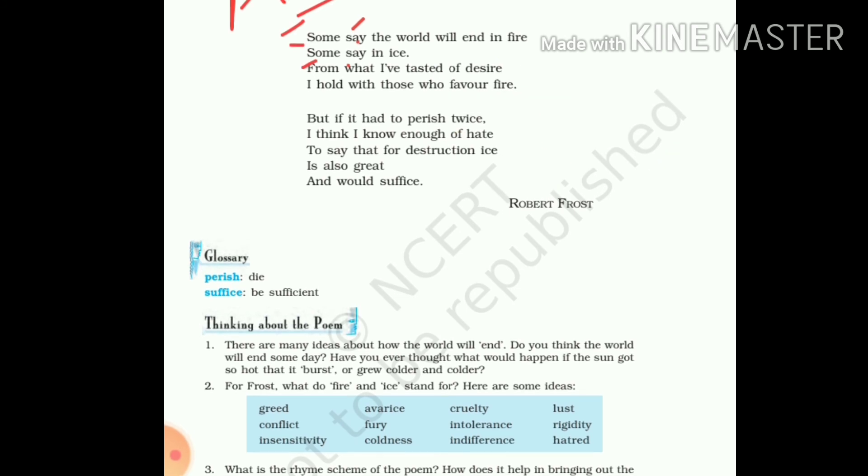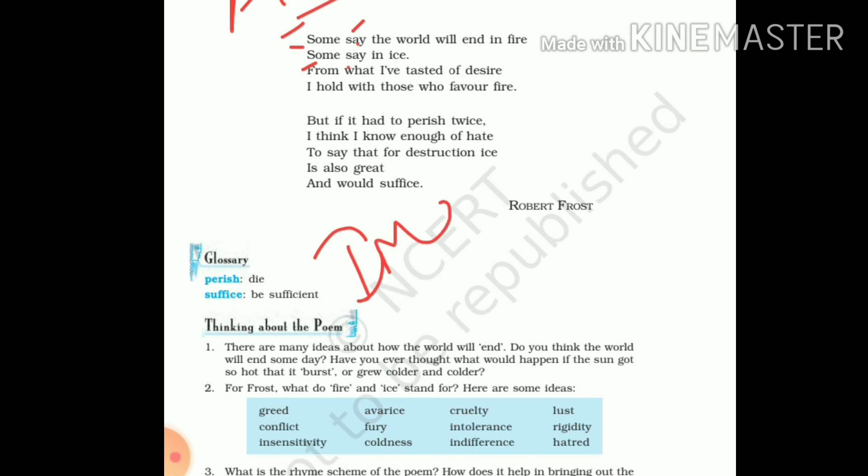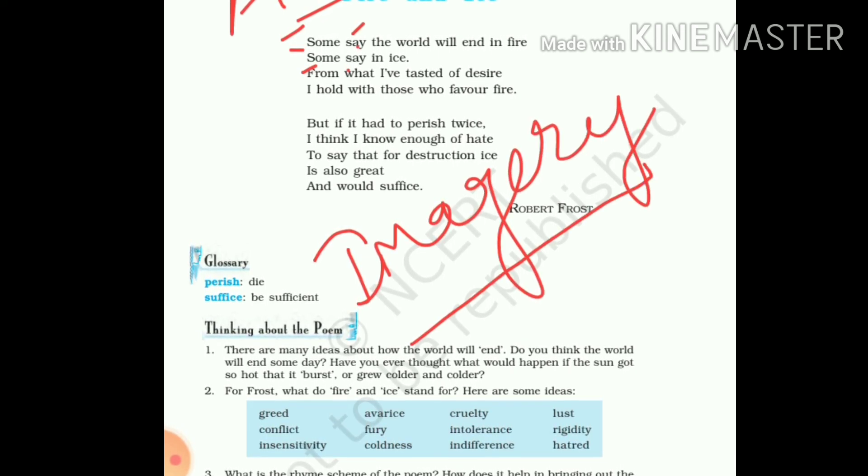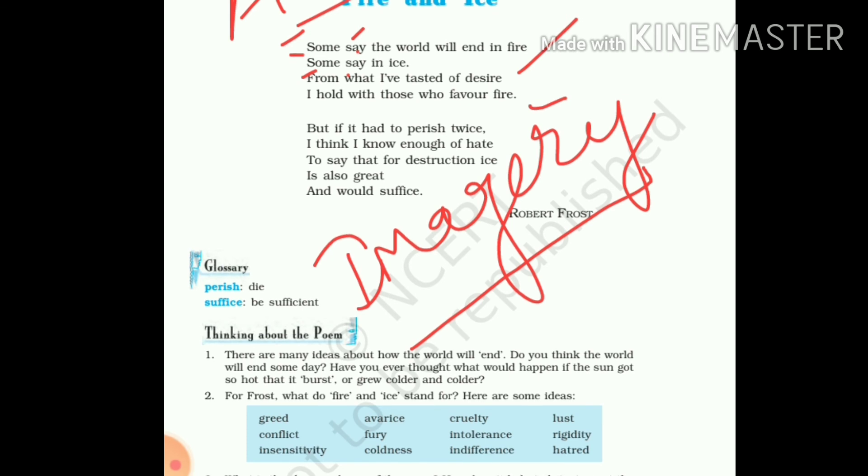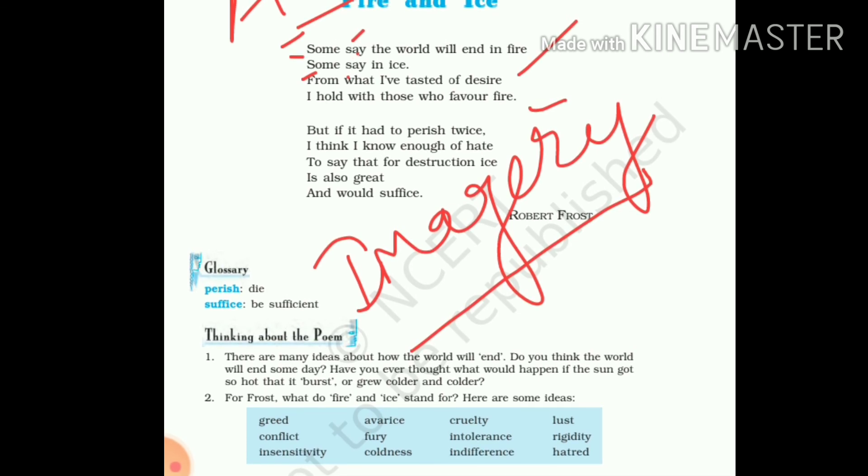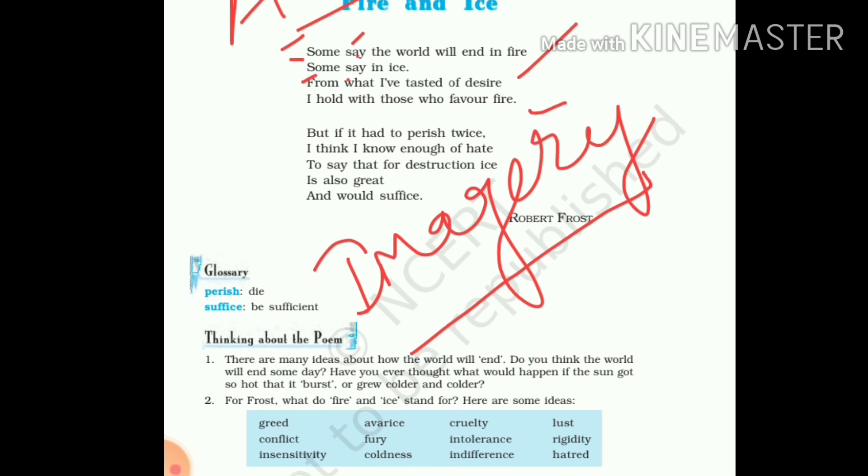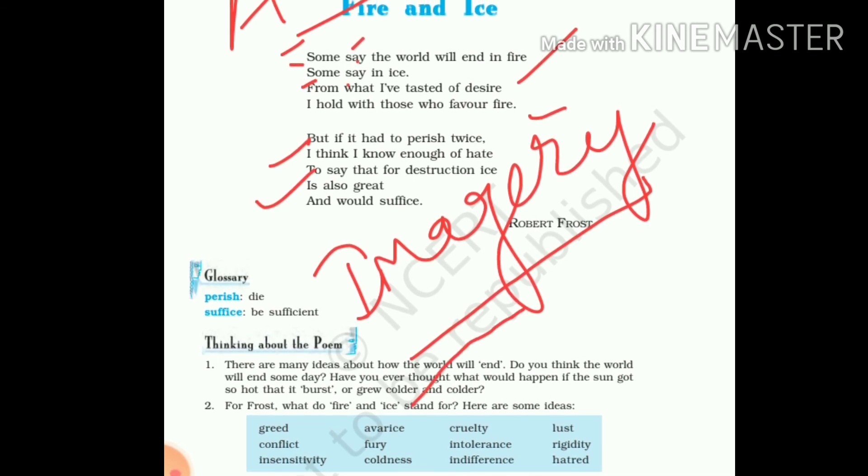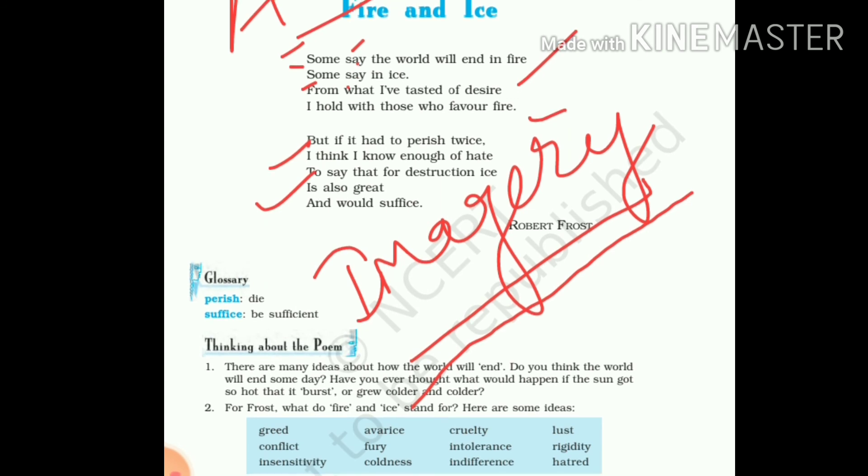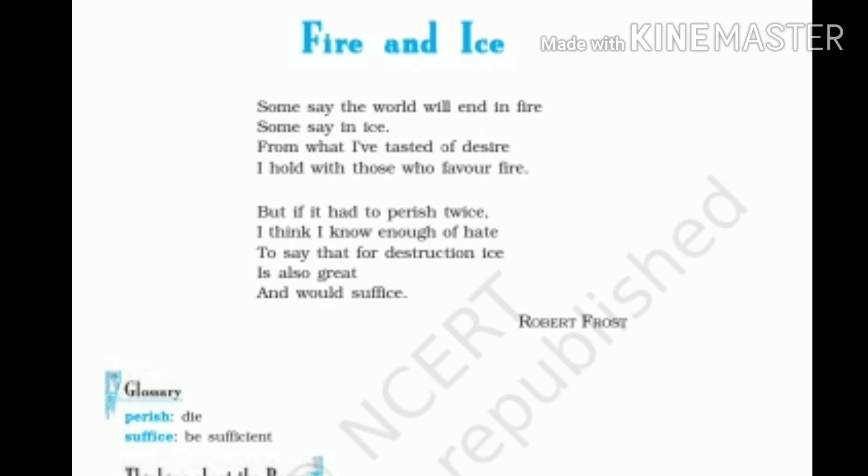Now we talk about the literary device imagery. In this entire poem, the poet has imagined a fire of desire that it would be the reason for the end of this world. The poet has created images of destruction in front of us. And in this way, another poetic device, symbolism, is used by the poet.